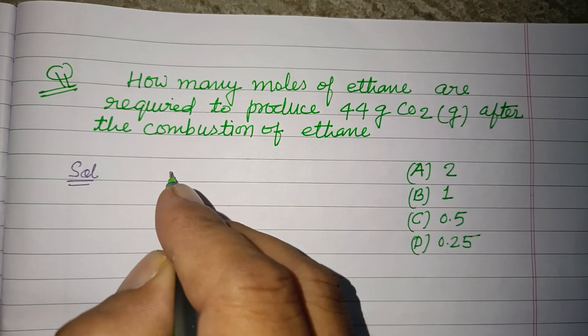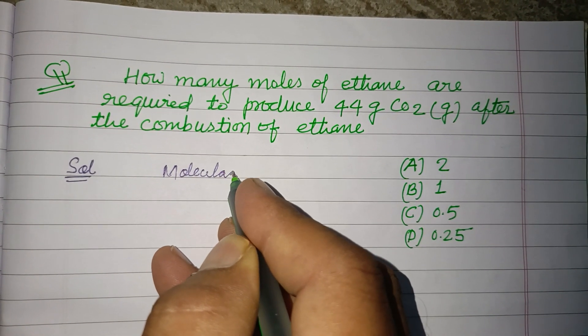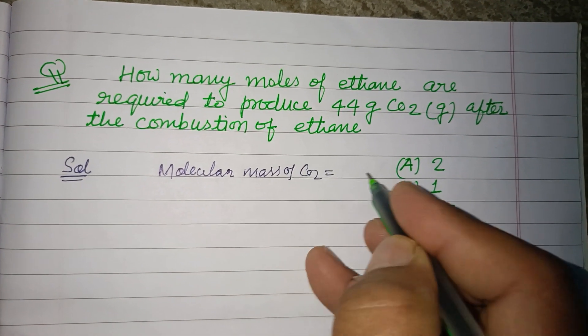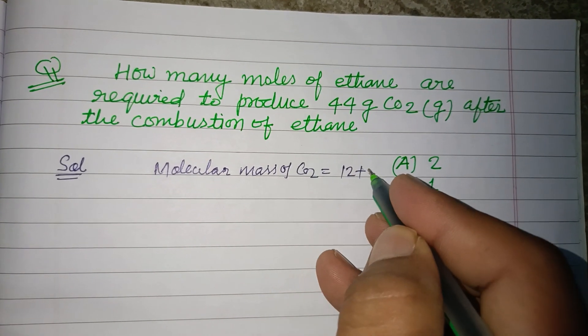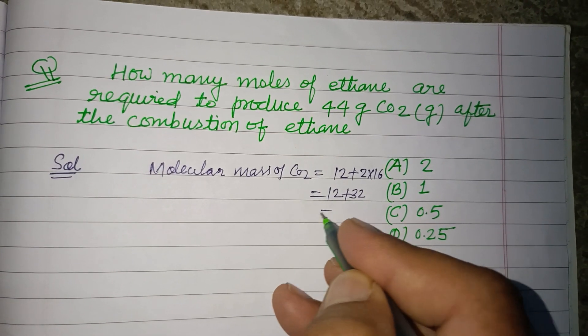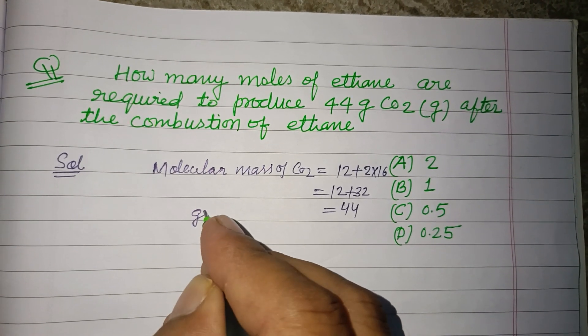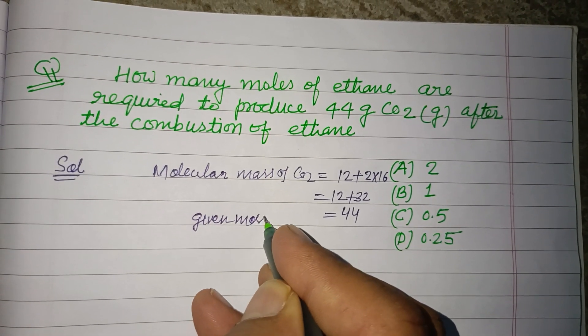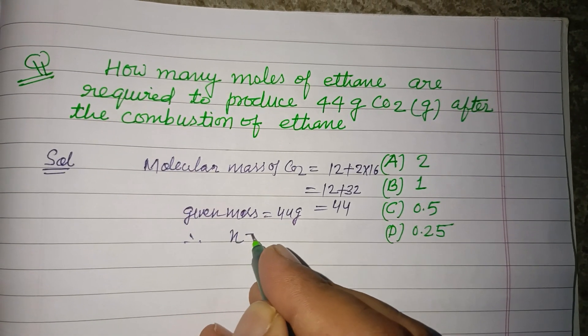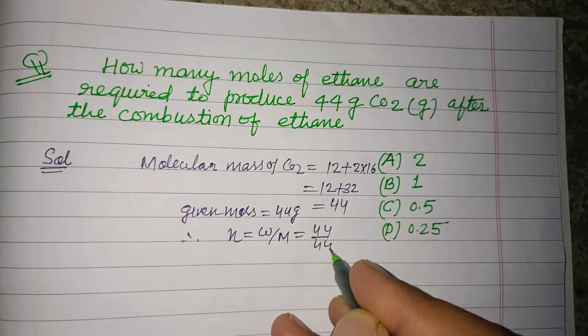Starting the solution, the molecular mass of CO2 is carbon 12 and 2 times oxygen 16, which equals 12 plus 32, that is 44. Given mass is also 44 grams. Therefore, number of moles n equals w upon m, so this is 44 upon 44, that is 1.